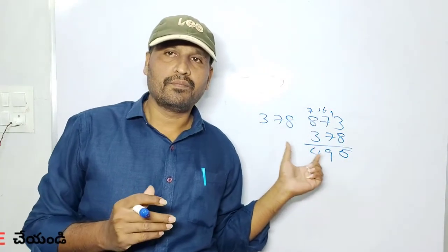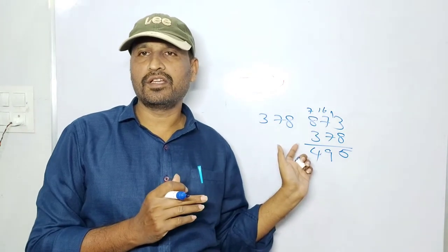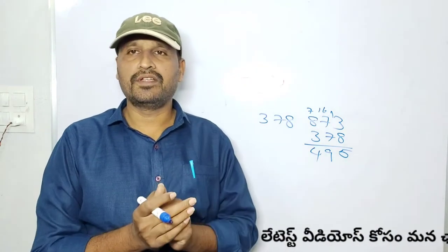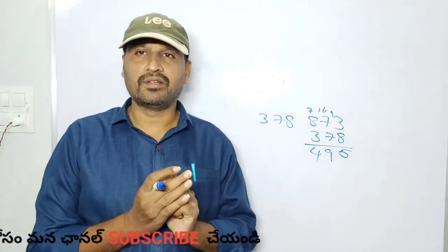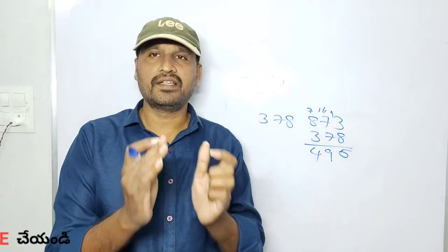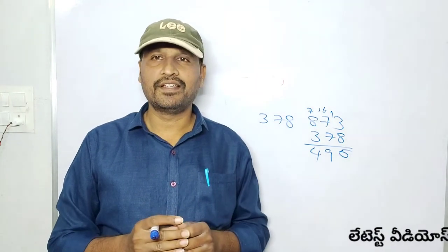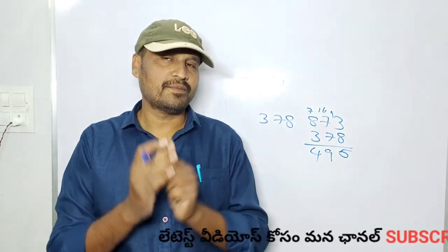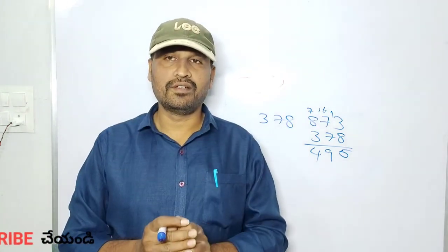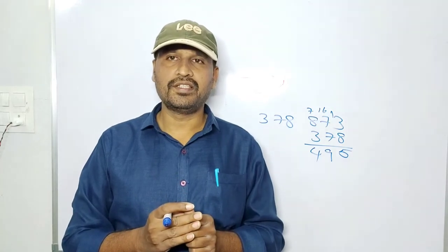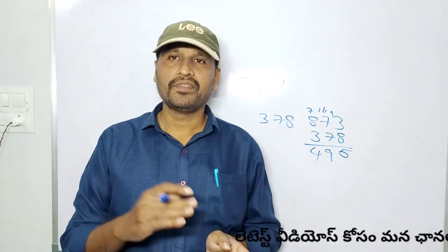The answer is 495. The first digit is 4 and the last digit is 5, which add up to 9. Similarly, first digit 3 gives result 396, and first digit 4 gives 495.